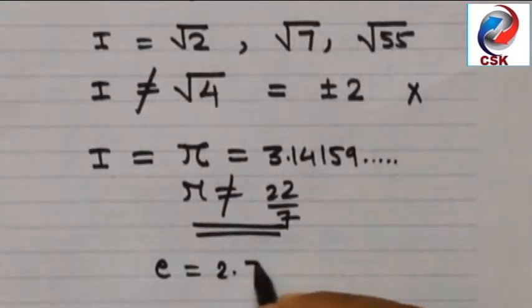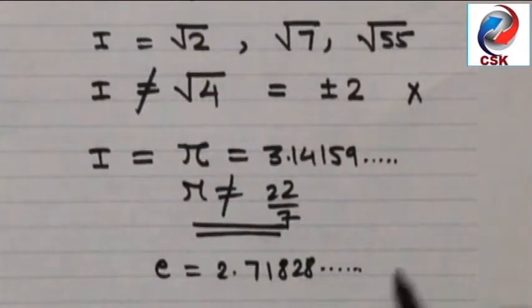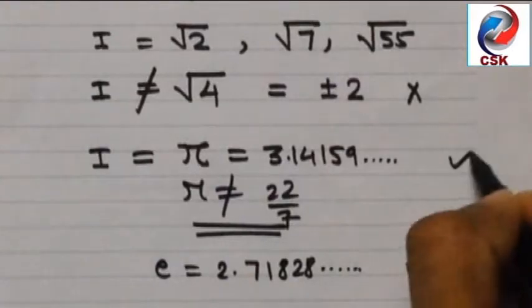In the same way exponential e 2.71828 and so on. This cannot be written in the form of a by b. So this is an irrational number.